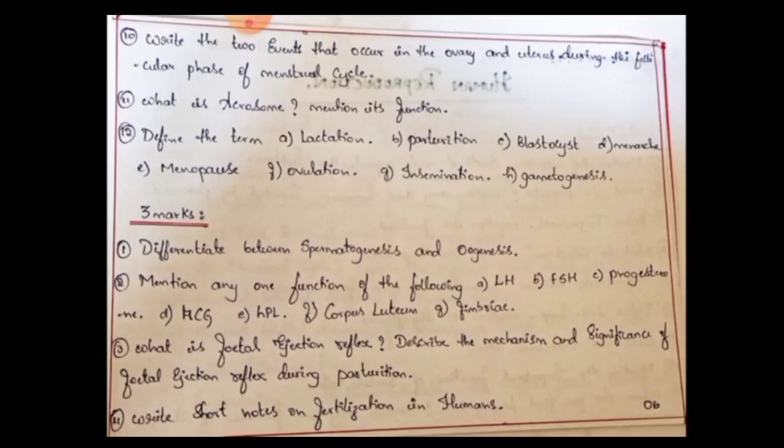Next: Write the two events that occur in the ovary and uterus during the follicular phase of the menstrual cycle. The menstrual cycle has 4 important phases — if you know the 4 phases, you can answer the question. Next: What is the acrosome? Mention its function. Define the following terms: lactation, parturition, blastocyst, menarche, menopause — extra focus. Also: ovulation, insemination, gametogenesis — all are expected definitions.